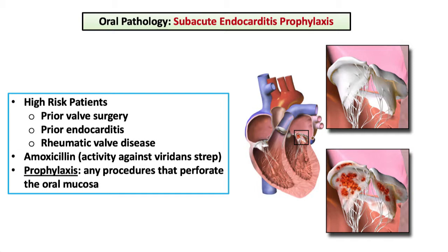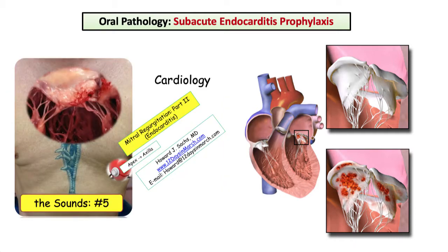High risk for SBE is also defined by prior endocarditis or rheumatic valve disease. Any dental procedure that perforates the oral mucosa warrants prophylaxis for those at high risk. A detailed presentation of endocarditis is presented in the cardiology section of 12 Days in March.